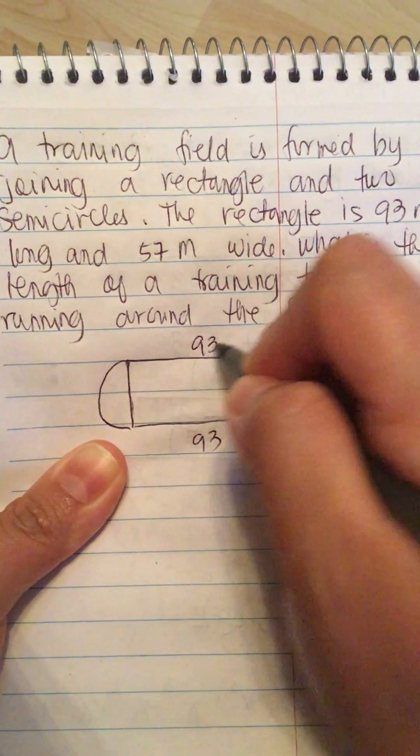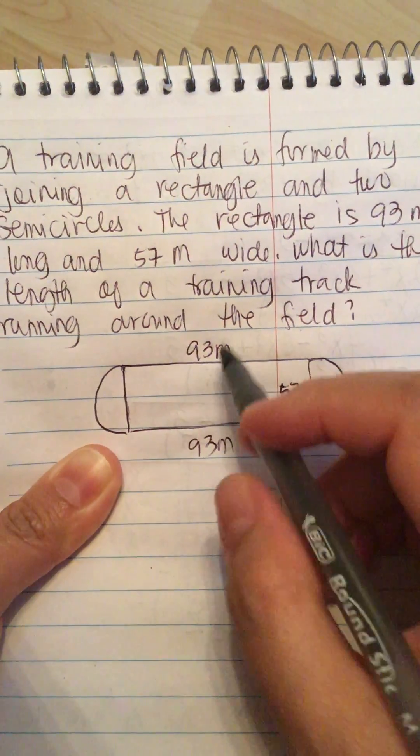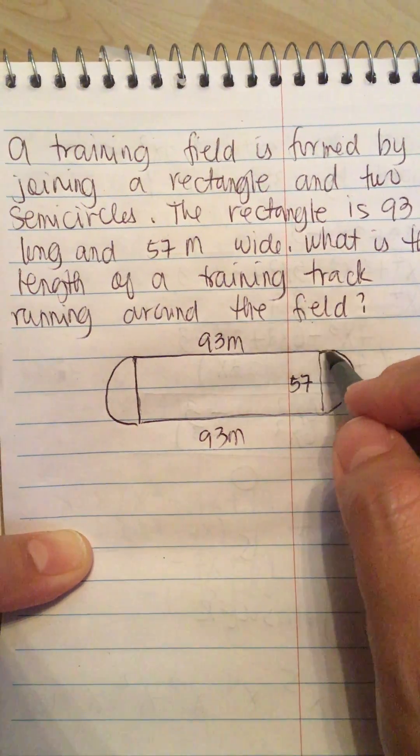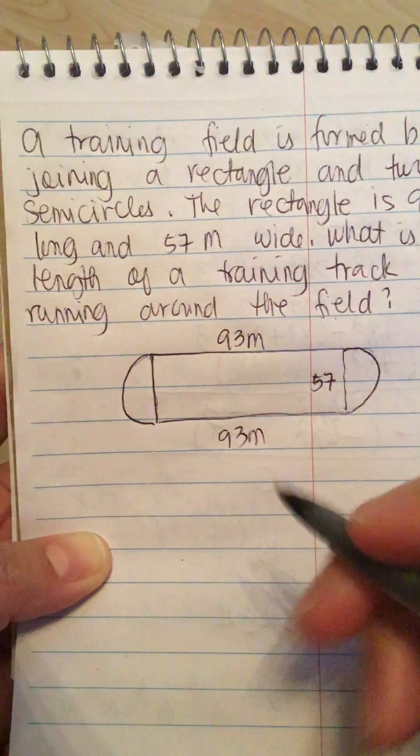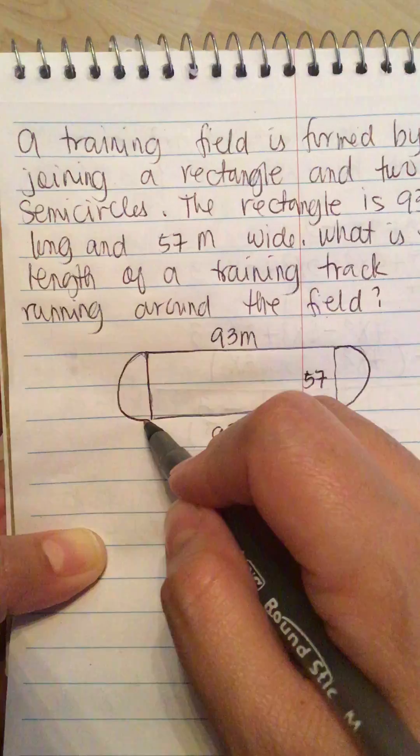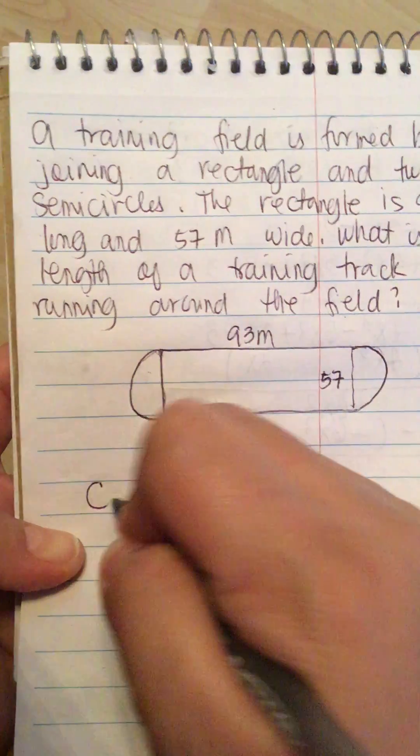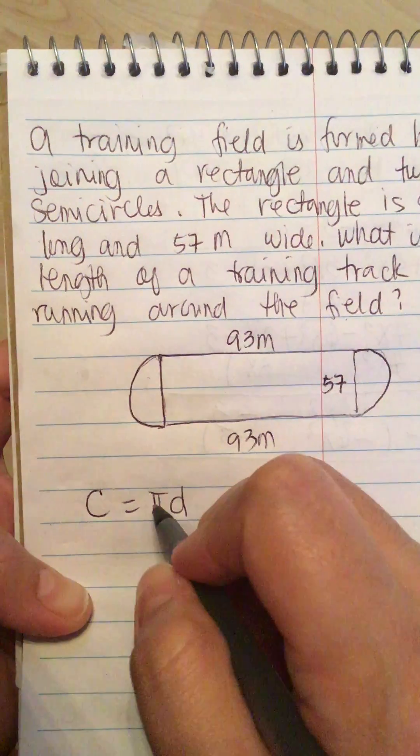...means that this is also 93 meters. So we have to find this distance and this distance. It's a semicircle, but there are two of them, so we have C equals πD, and they...